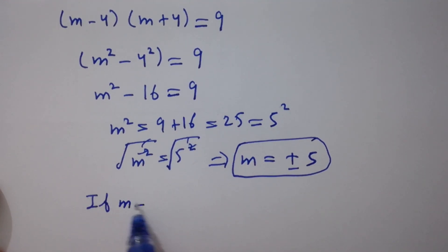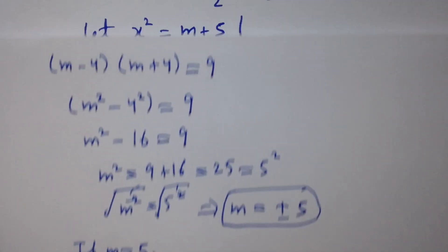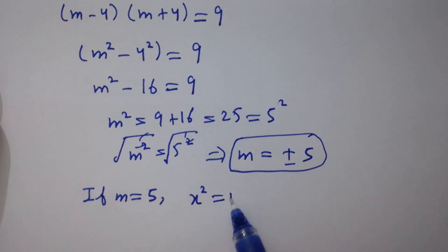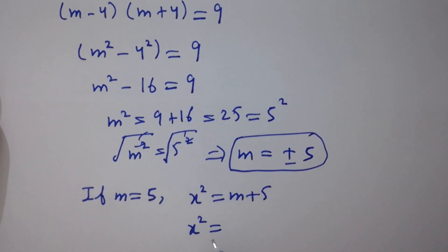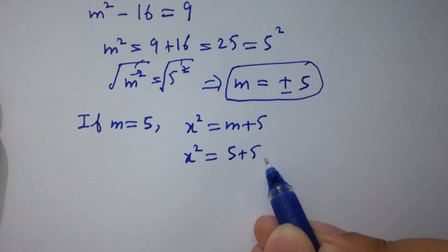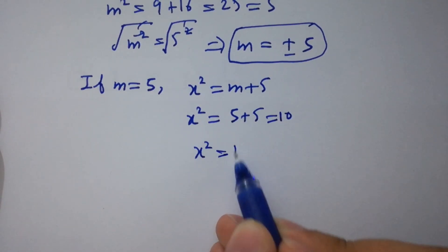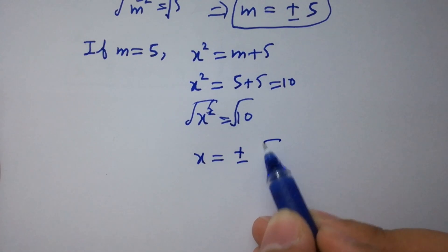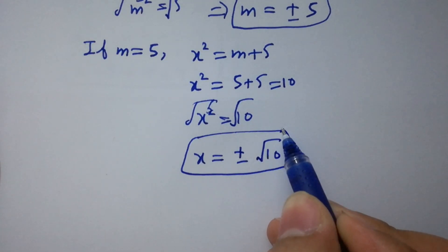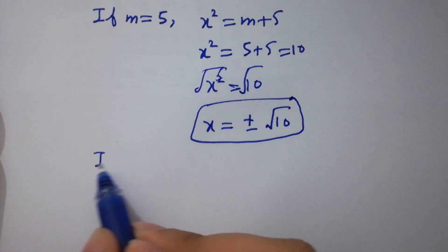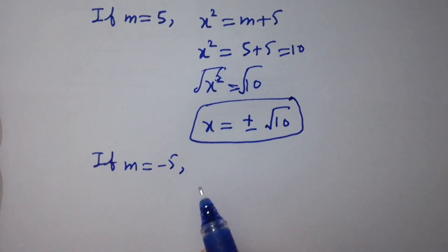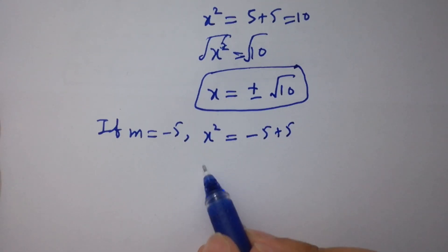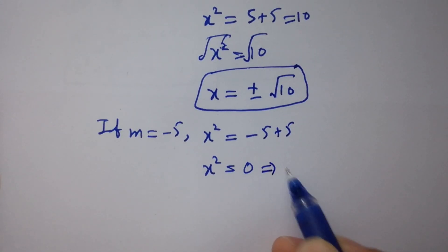If m = 5, then x² = m+5 = 5+5 = 10. So x² = 10. Taking square root on both sides, x = ±√10. If m = -5, then x² = m+5 = -5+5 = 0. So x = 0.